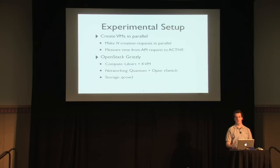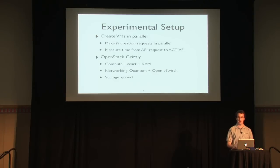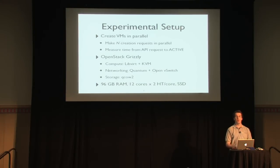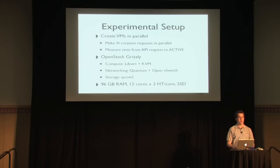I'm giving the setup details for two reasons: it's nice to know results for the latest version of OpenStack, but also these results apply specifically to this configuration — other components or drivers have different performance characteristics. The techniques I'm presenting can be used to analyze other OpenStack configurations. The system is a single compute host with 96 GB of RAM, 12 hyper-threaded cores giving 24 logical processors, and solid-state drives.